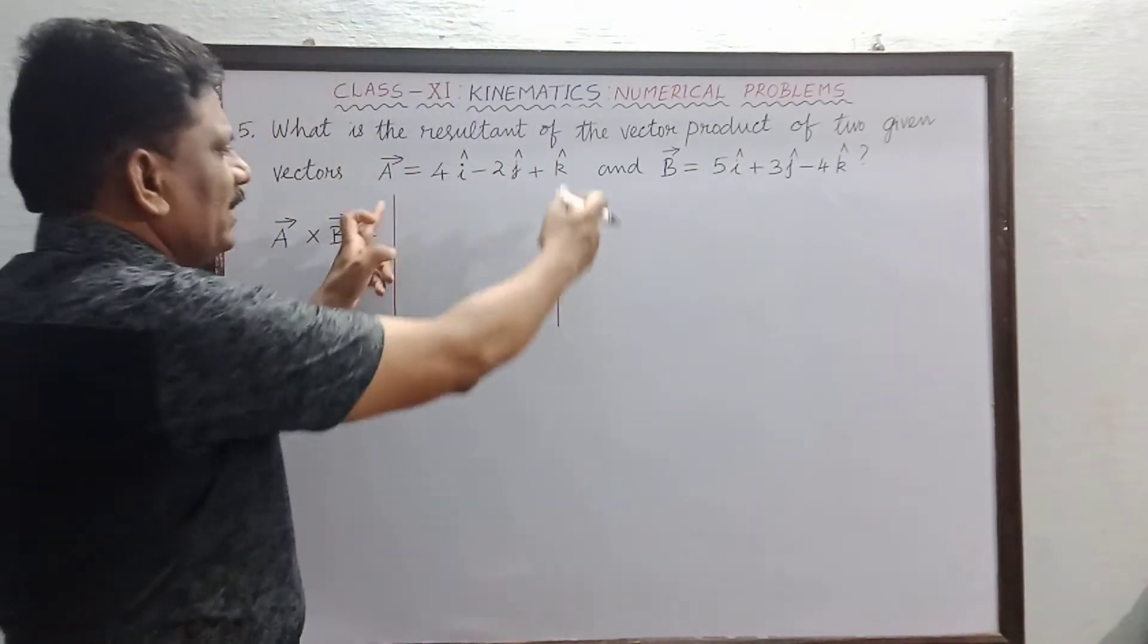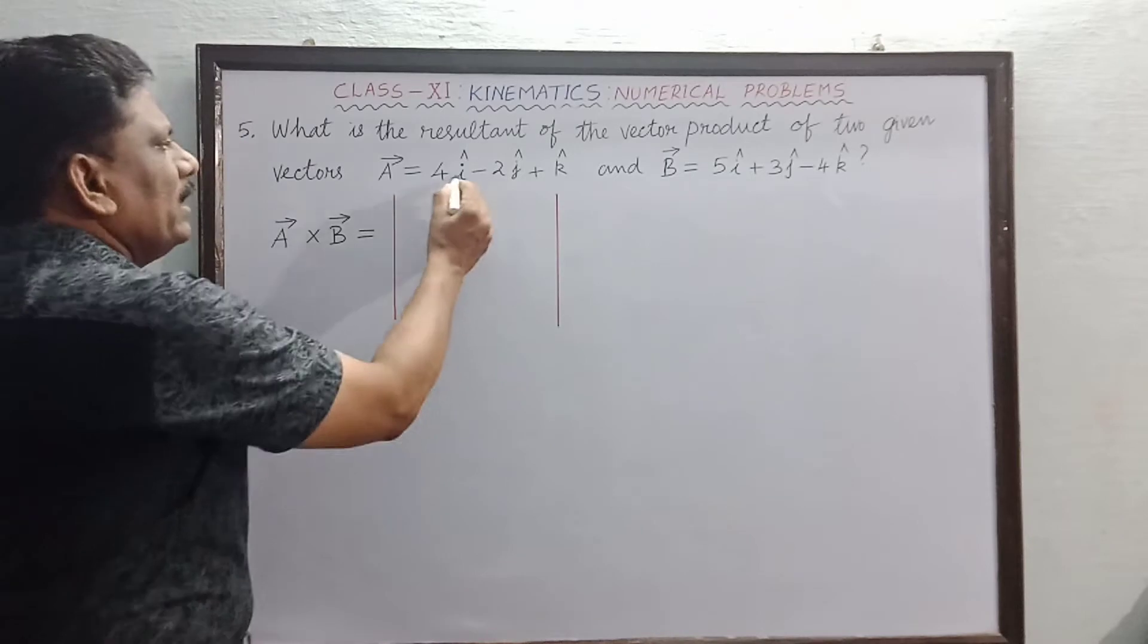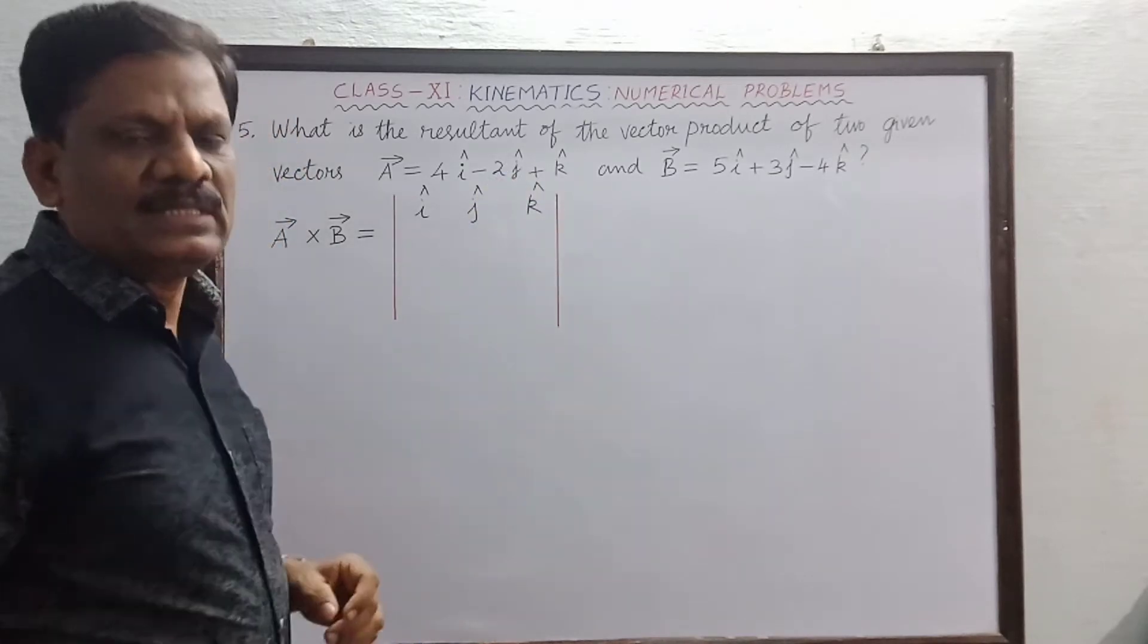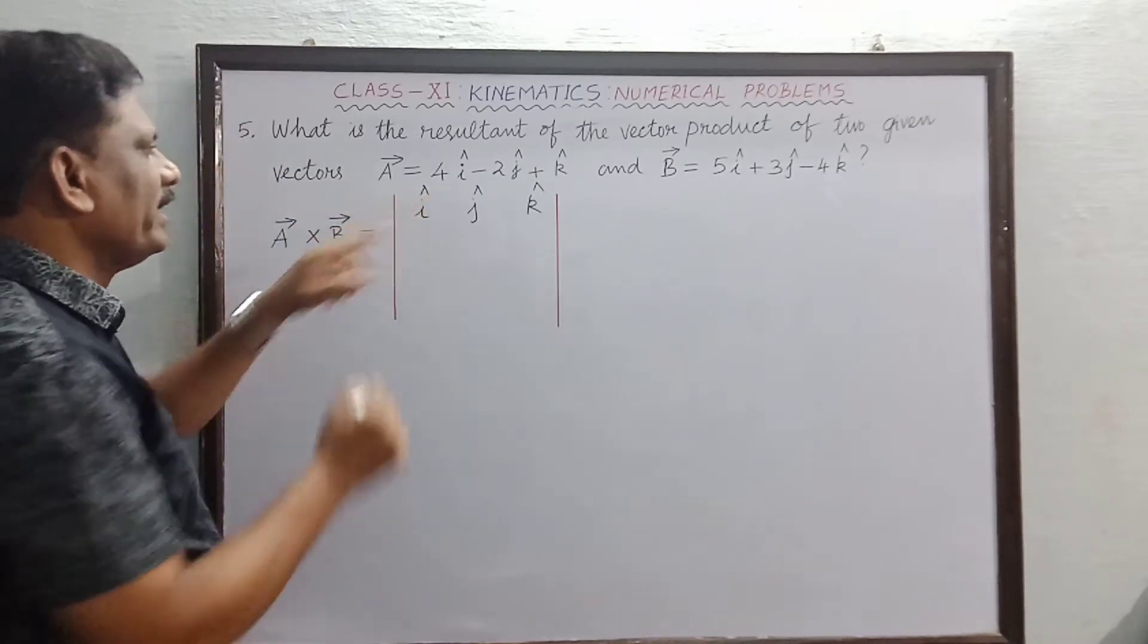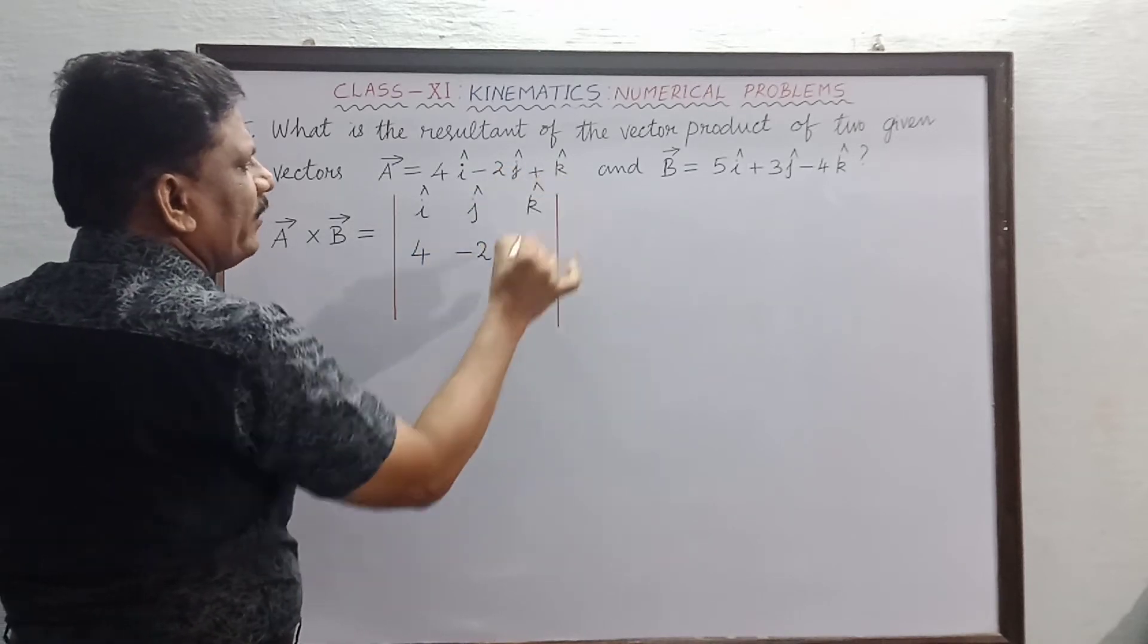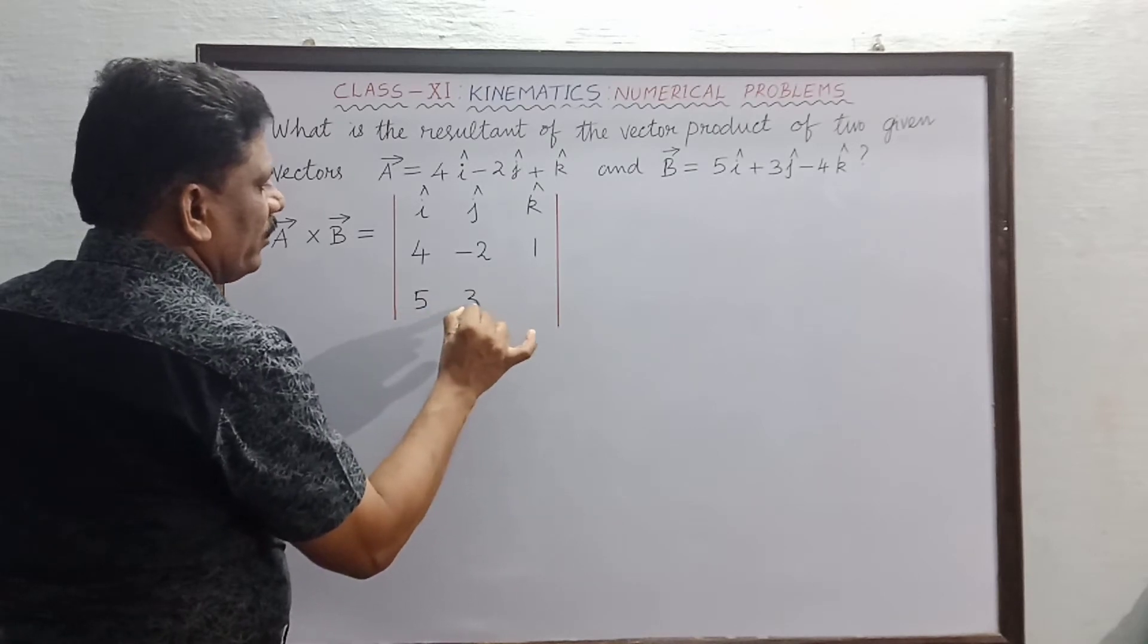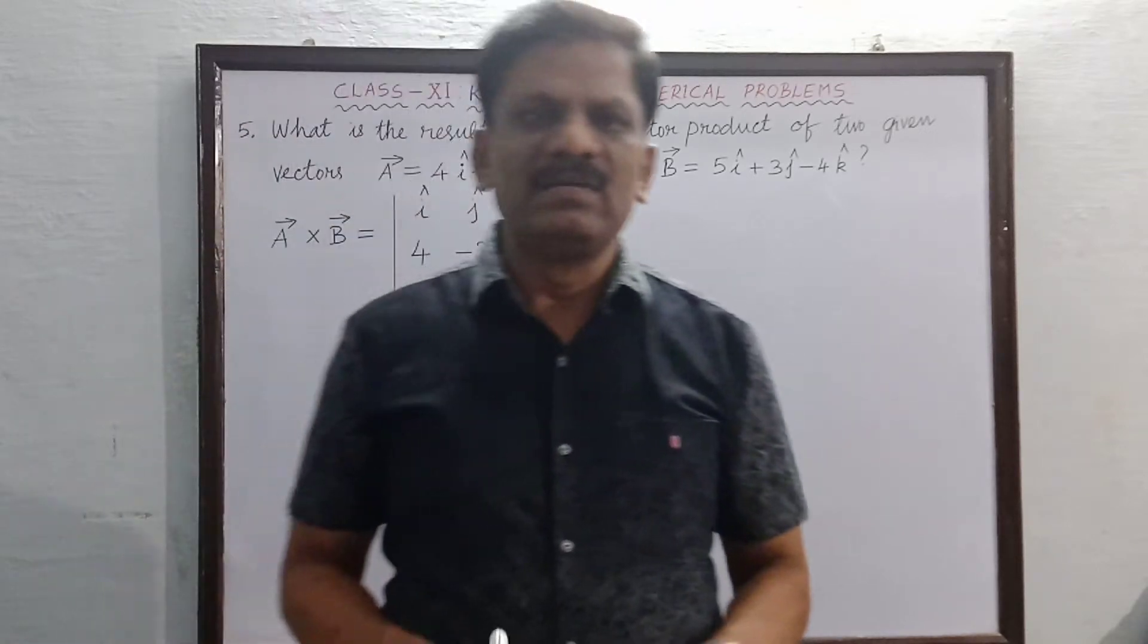The modulus of A vector is equal to the determinant symbol. Then the coordinates of i, j, k. In the first vector A, the coordinates of i is 4, j is minus 2, k is 1. In B vector, the coordinates are 5, 3, minus 4.